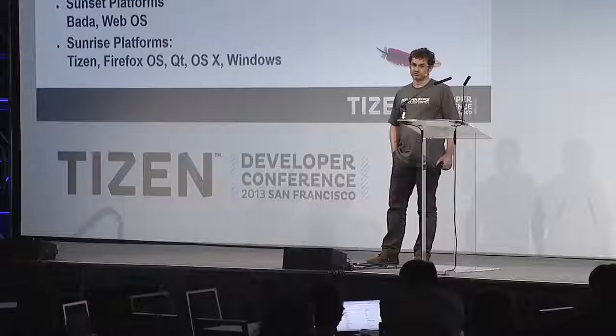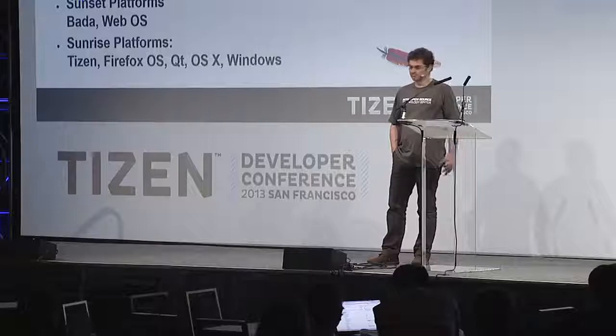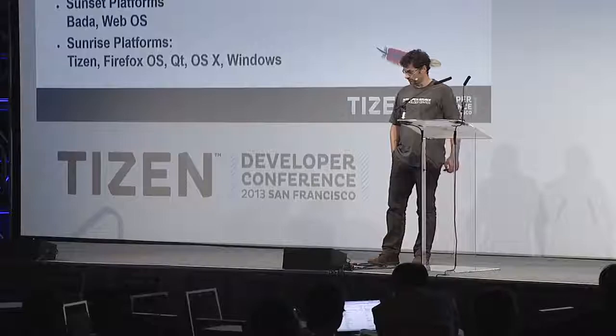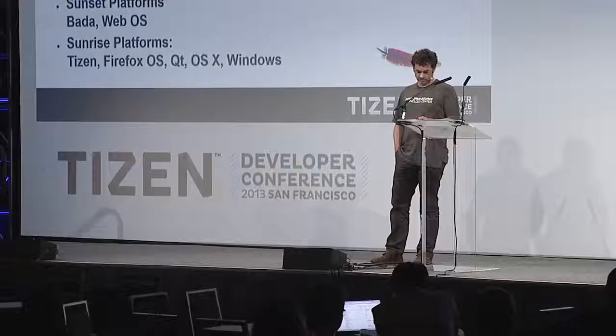Bada is a sunset platform because Samsung said it should be replaced by Tizen. WebOS is sunset because with the LG acquisition, it is going to become a Web TV OS — we don't know exactly what it will become, and there will be no devices. Sunrise platforms include Tizen, Firefox OS, Qt, OS X, and Windows, so the community is also interested in desktop platforms.